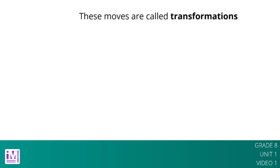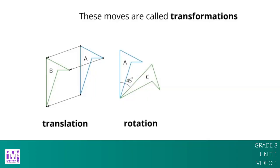These moves are called transformations. A translation moves every point in a figure a given distance in a given direction. A rotation moves every point on a figure around a center by a given angle in a specific direction. A reflection across a line moves every point on a figure to a point directly on the opposite side of the line.